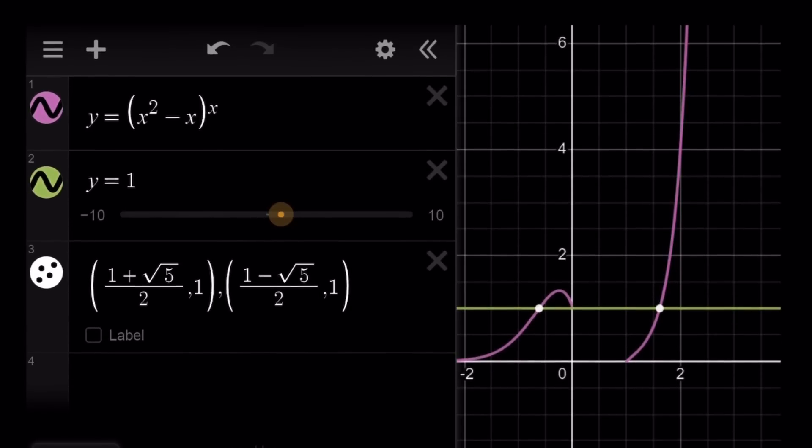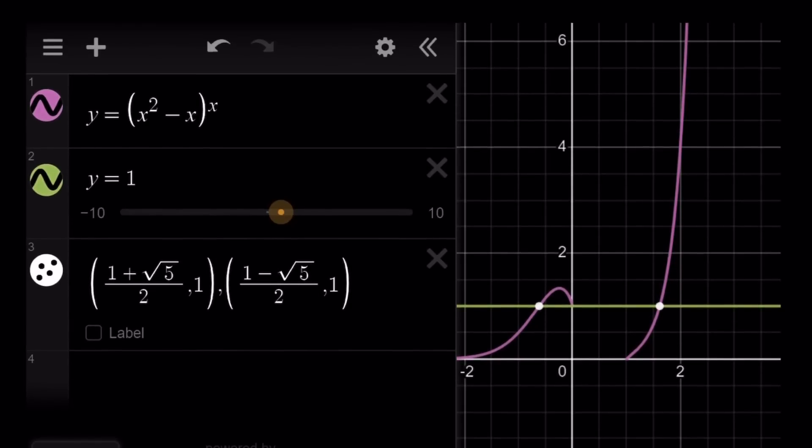And here's the graph of y equals x squared minus x to the power x and its intersection with the horizontal line y equals 1. So we're basically trying to solve the original equation by using two graphs, and you can see two intersection points here.